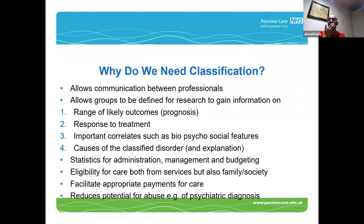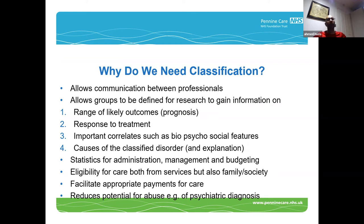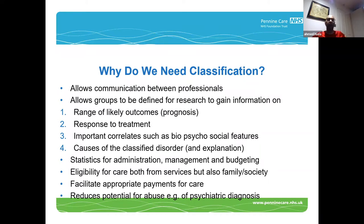So why do we need classification? It allows communication between professionals and has administrative purposes — those are probably the two main purposes. If you have to record a discharge summary or activity level records, classification is important. It also allows groups to be defined so research can gain information on subjects such as range of likely outcomes, what kind of responses you can expect to different treatments, and what other important features are associated with this classified problem, maybe even things about its causes.